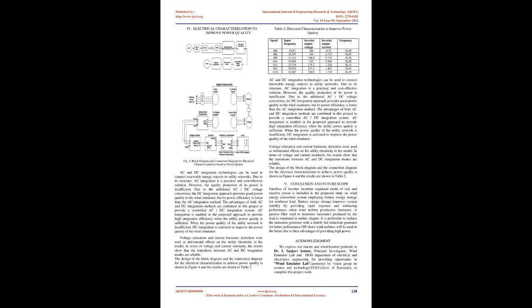Wind energy conversion systems (WECS) show variability in their output power as a result of changing wind speed. This introduces a grid uncertainty factor and poses many challenges to electricity system designers and utility operators in terms of grid network integrity, grid security, grid stability, and power quality. Figure 1 shows the Block Diagram of WECS.